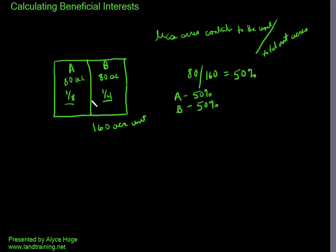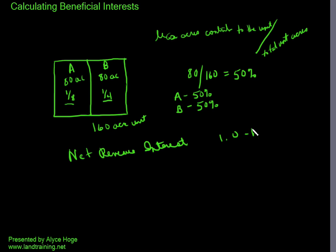So the way we calculate what we call net revenue interest is we take 100% — or one — minus the burdens. Burdens include royalty interest, overriding royalty interest, non-participating royalty interest, and that's going to equal the net revenue interest.